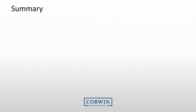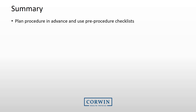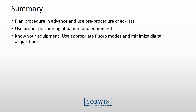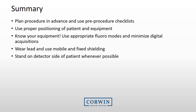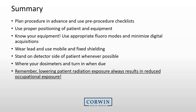To summarize, radiation doses to patients and staff can be greatly reduced if practical optimization steps are taken. These include planning the procedure in advance, positioning equipment and the patient to reduce exposure, and using optimized settings on the equipment. For fluoroscopy users, wear personal lead and use mobile and fixed shielding. Whenever possible, stand on the detector side of the patient. Wear your dosimeters and turn them in to your radiation safety officer when due. Remember, reducing patient radiation exposure always results in lower exposure to staff.